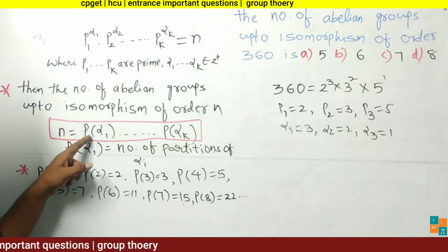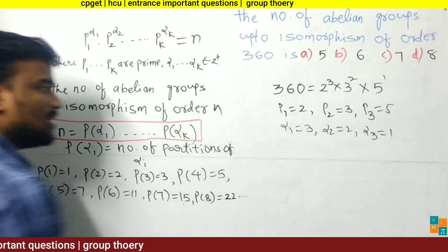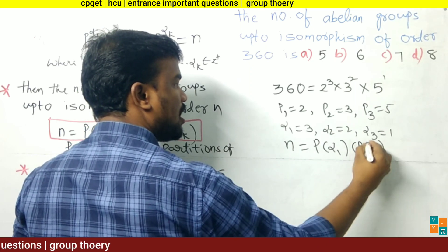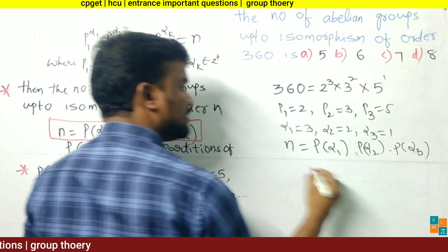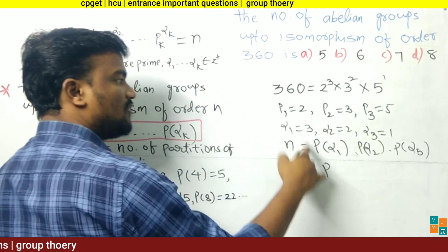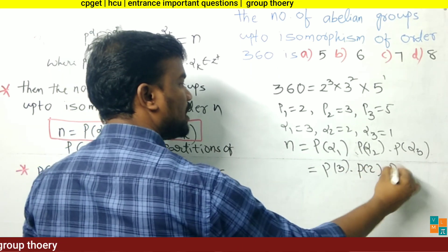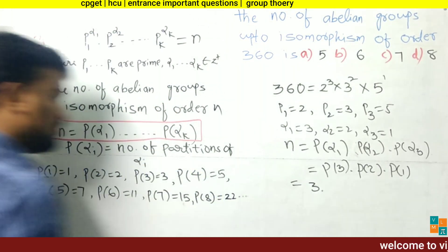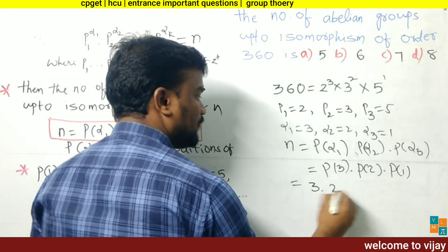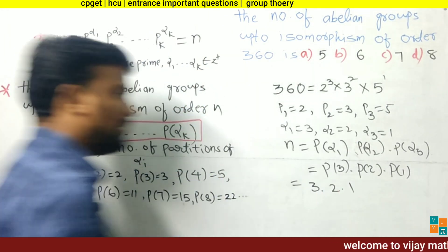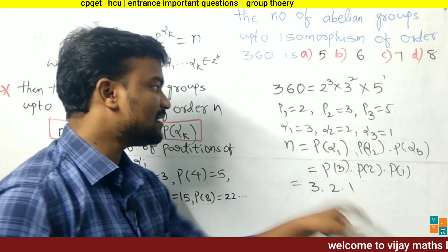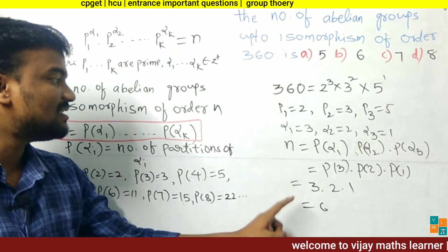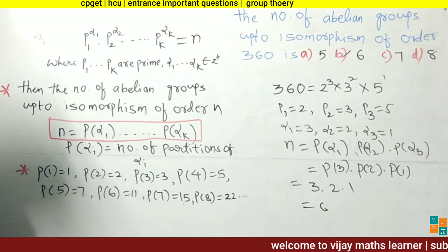Using the formula, n = P(α₁) × P(α₂) × P(α₃) = P(3) × P(2) × P(1). The value of P(3) is 3, P(2) is 2, and P(1) is 1. Multiplying: 3 × 2 × 1 = 6. So the number of abelian groups up to isomorphism of order 360 is 6, and option B is the answer.